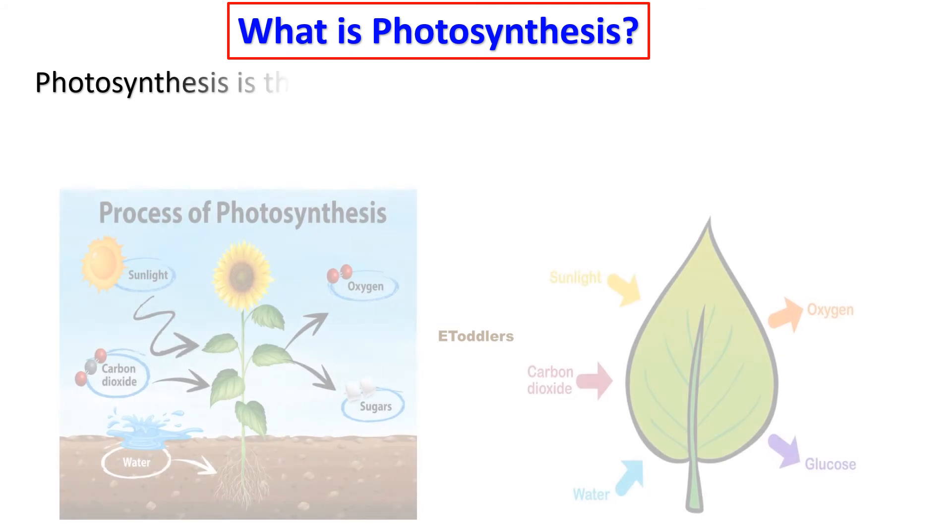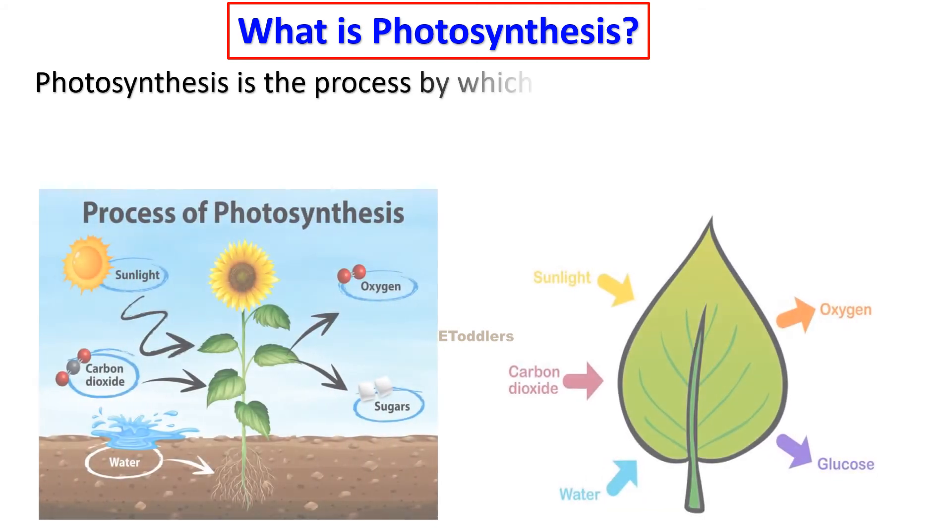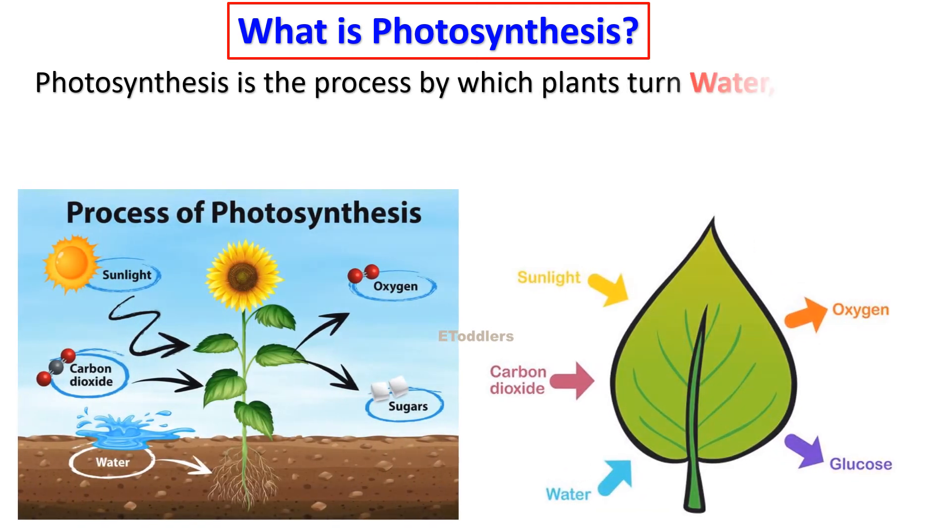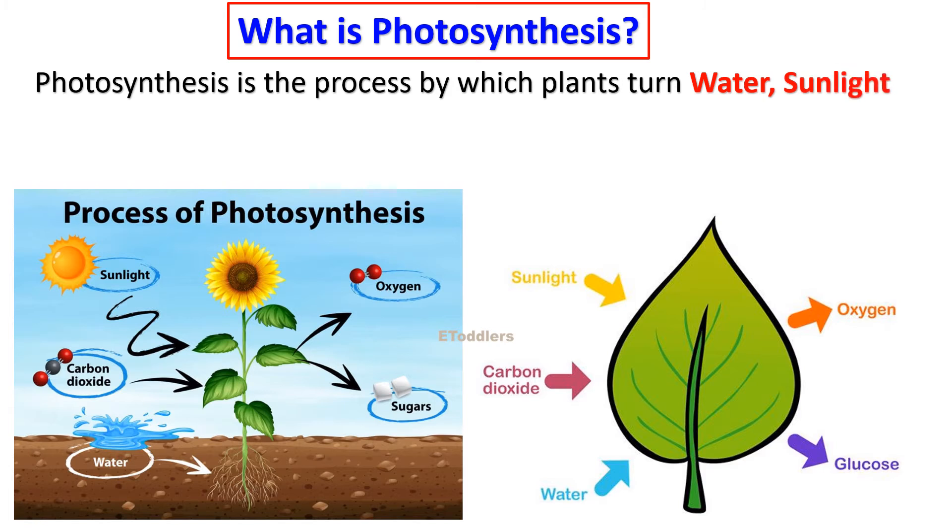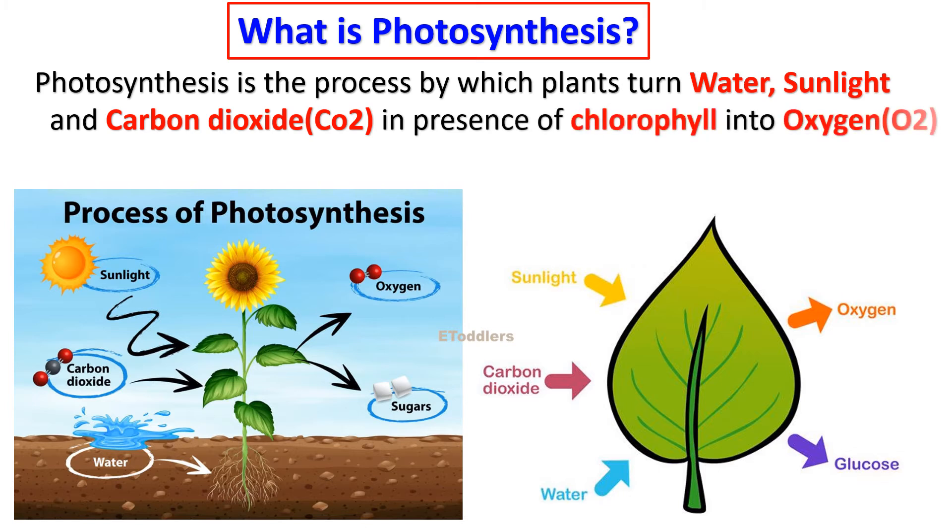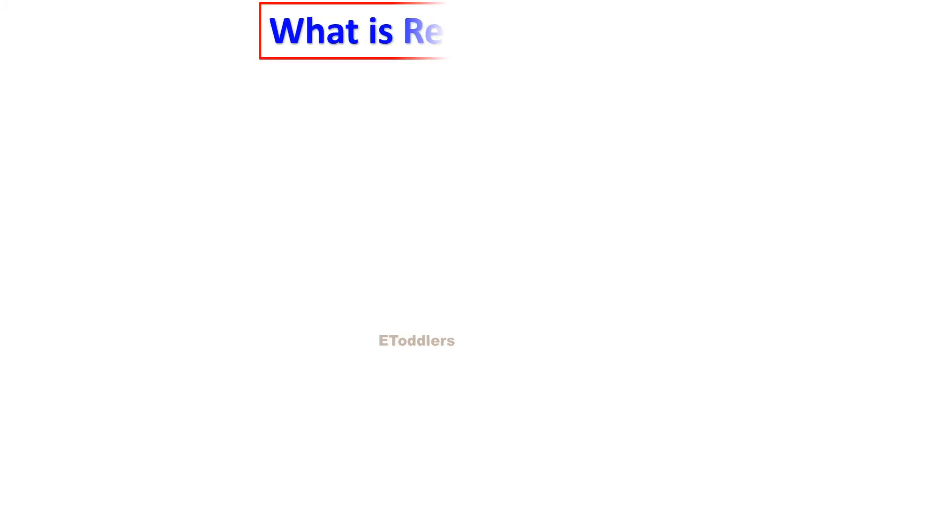Photosynthesis is the process by which plants turn water, sunlight and carbon dioxide in presence of chlorophyll into oxygen and food in the form of glucose. What is respiration?